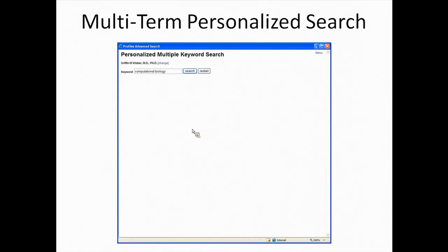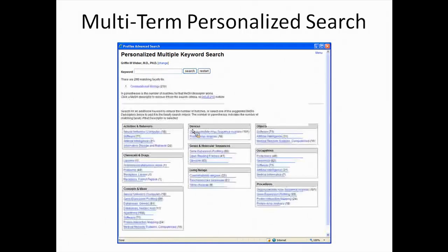Next I want to talk about personalized search. This is not a tool currently available to faculty, but something we use internally for different experiments. Let's say I'm a student looking for a mentor and I'm interested in computational biology. I type in computational biology and there are 210 matches.